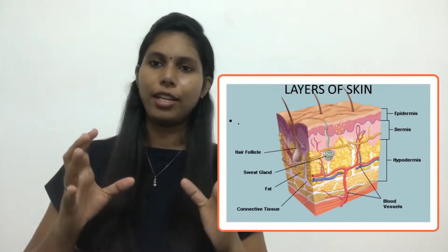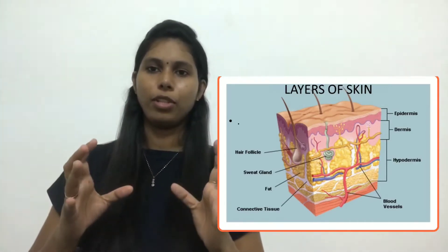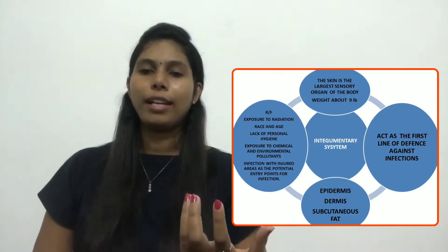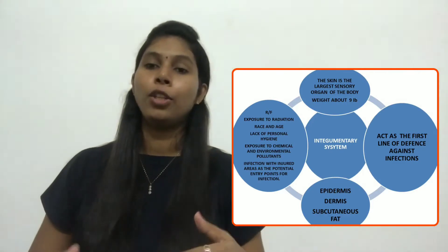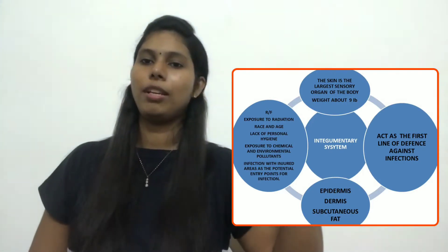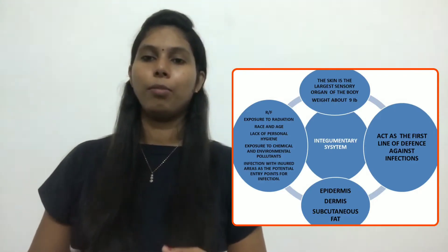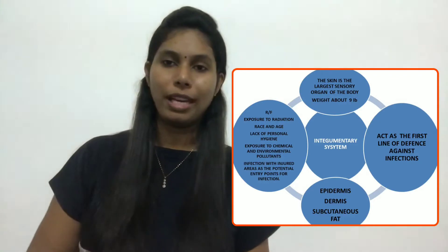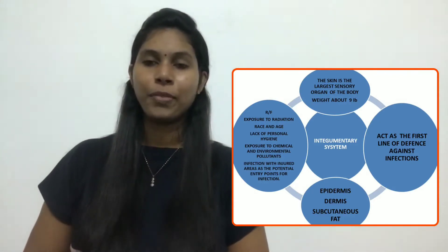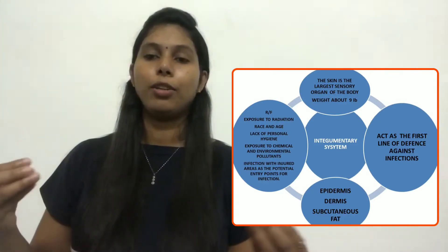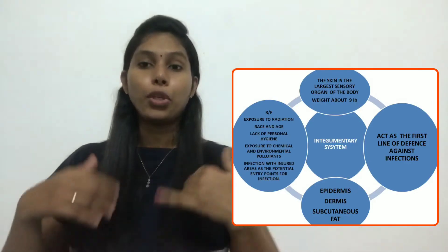Now we will see the risk factors related to integumentary system diseases and disorders. One category is non-modifiable risk factors, such as race and age. Older people are more prone to pressure sores due to loss of skin elasticity. Certain races have a higher incidence of some skin cancers. Another risk factor is exposure to radiation and sunlight, or indoor tanning.